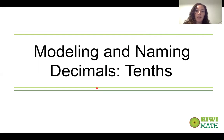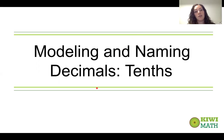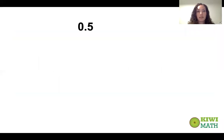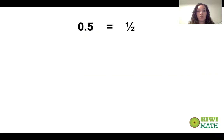Today we're going to talk about modeling and naming decimals in the tenths place. Thinking about decimals, a lot of students know what 0.5 means, and a lot of you will say it means a half, which is true. 0.5 is equivalent to a half, but where does the five come from?